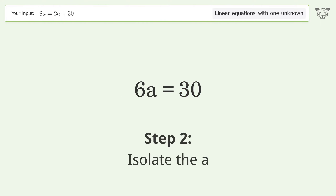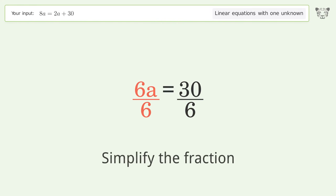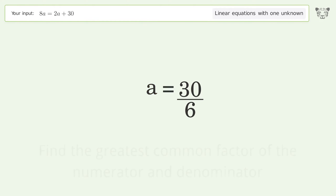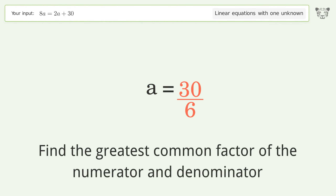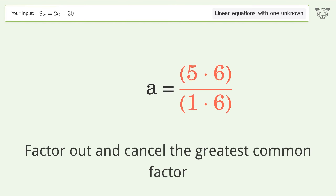Isolate the A. Divide both sides by 6. Simplify the fraction. Find the greatest common factor of the numerator and denominator. Factor out and cancel the greatest common factor.